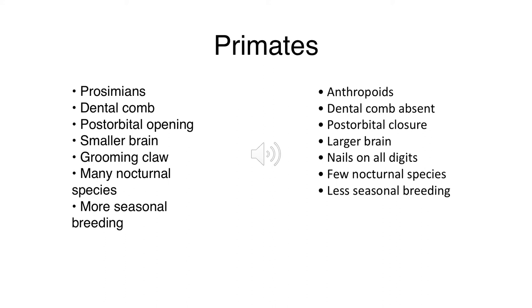Prosimians do still have at least one claw - while the trend is toward nails, they retain a grooming claw on all digits except one. Haplorhines have nails on all digits. Prosimians are mostly nocturnal, which is unique because our trend moves toward being more diurnal. In our anthropoids, there are very, very few nocturnal species.